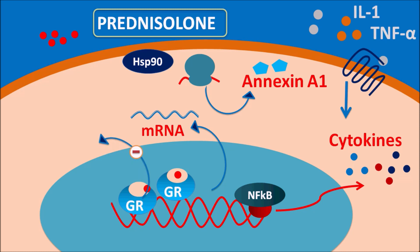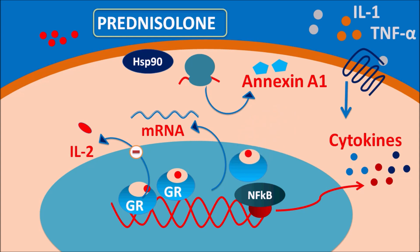Prednisolone can also reduce the gene transcription of IL-2, which is another cytokine responsible for proliferation of the immune response. The glucocorticoid receptors activated by prednisolone can also interact with NF-κB, inhibiting its activity such that the gene transcription of inflammatory mediators is inhibited. By all these actions, prednisolone reduces the inflammatory response as well as the immune response.